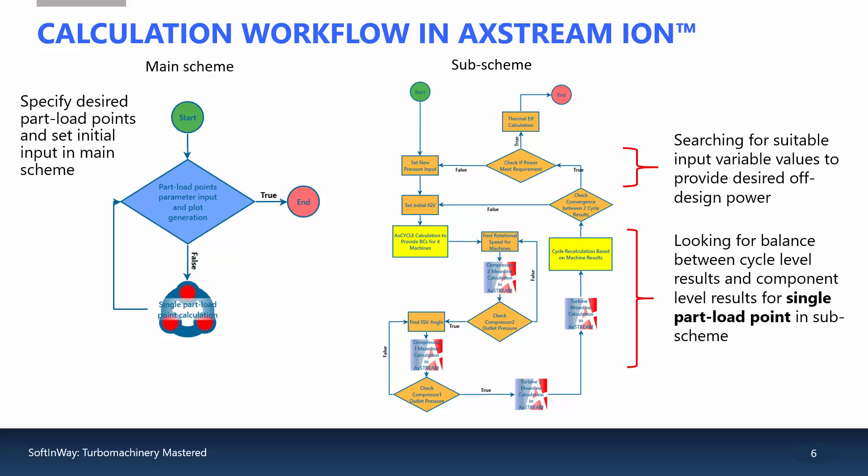Here is some information about how the automation is handled, including the data transfer between the tools. Two AxeStream Ion schemes are shown here. On the left is the main scheme and on the right is the sub-scheme which works inside of the main workflow. The main scheme is only used to control the number of part load points, range for the initial values and plotting the results of the system performance.